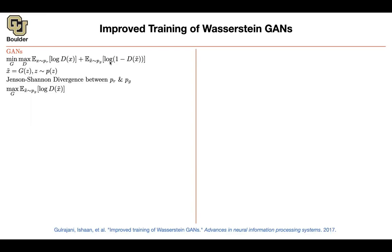So let's just change that. Rather than minimizing that objective with respect to G, let's maximize with respect to G. This is your new GAN objective function. This was a quick recap so you can compare the math in one slide.